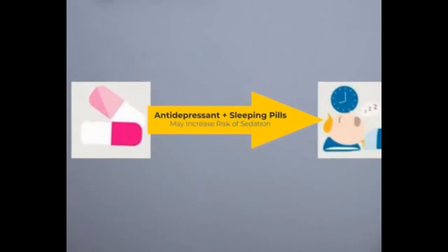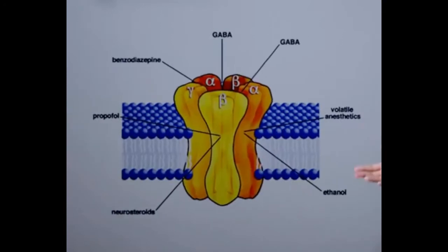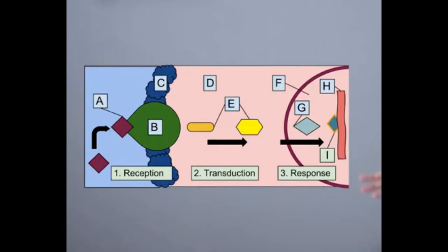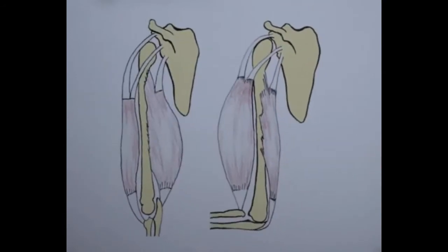The change in the organism's response on administration of a drug is an important factor in the pharmacodynamic interaction. Pharmacodynamic interactions can occur on the pharmacological receptors, on the signal transduction mechanisms, and antagonistic physiological systems.